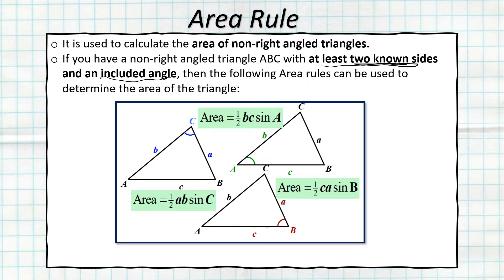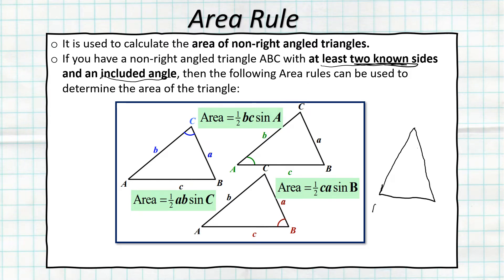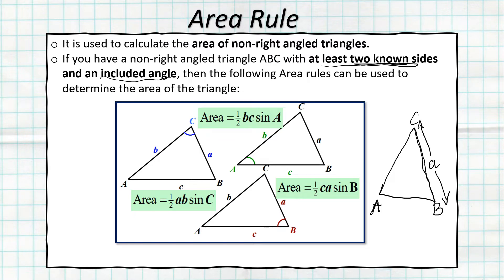In triangle ABC, to name the sides I follow the corresponding angle and use a small letter. The side facing angle A is called small letter 'a', the side facing angle B is 'b', and the side facing angle C is 'c'. This notation is important for applying the area rule formulas.